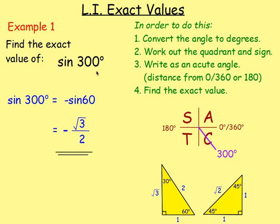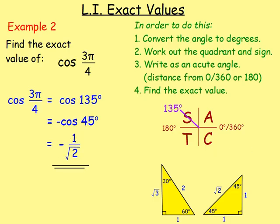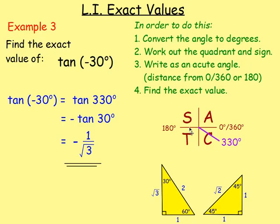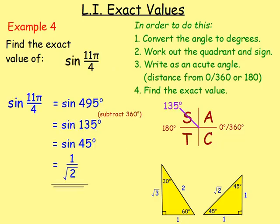If you wanted to work out sine 300, do the same thing. Work out the quadrant — sine is negative there — so it's negative sine 60, which is 60 degrees away from 360, and use the exact value triangles. For angles outside 0–360, remember the wave repeats every 360 degrees, so going back 30 degrees is the same as 330 degrees. If an angle is bigger than 360, just take 360 away to find the equivalent.